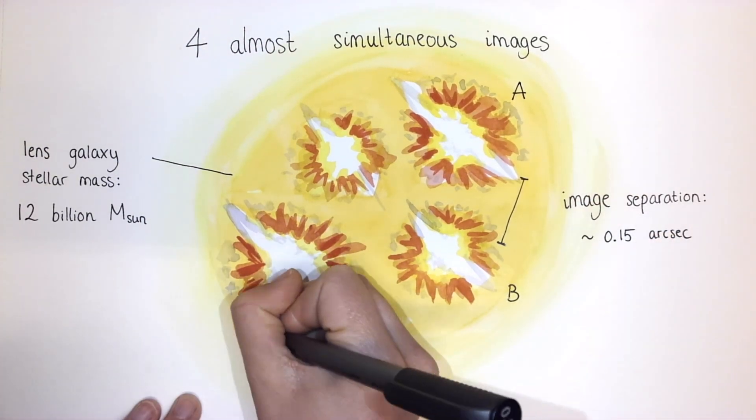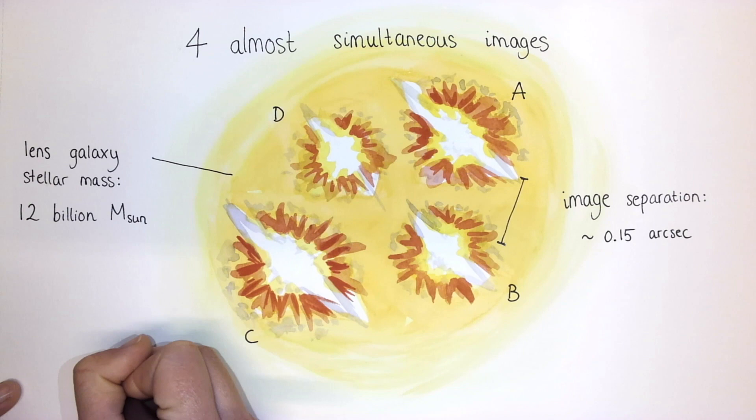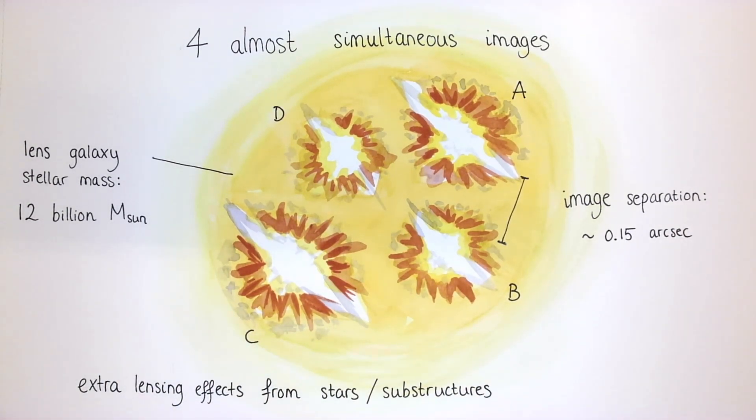Furthermore, our lens models indicate that the brightest images, A and C, should have actually been the faintest, suggesting the presence of additional lensing effects from stars, substructures, or dark matter in the lens galaxy.